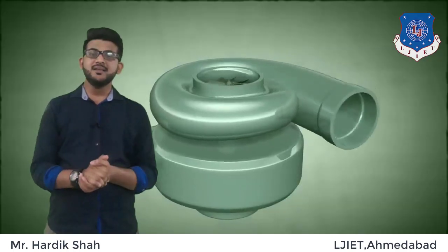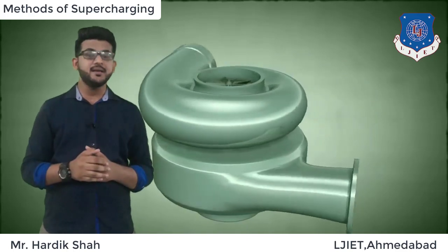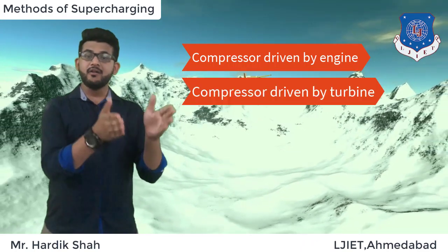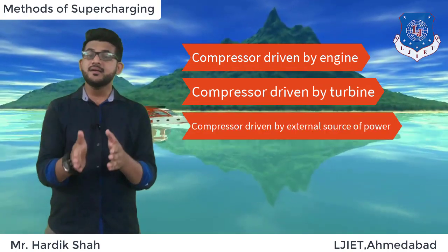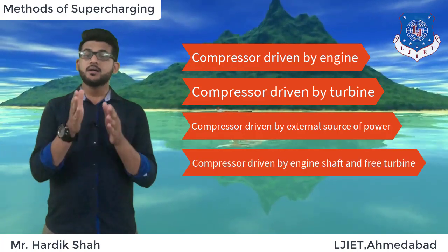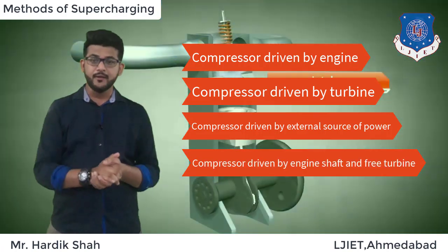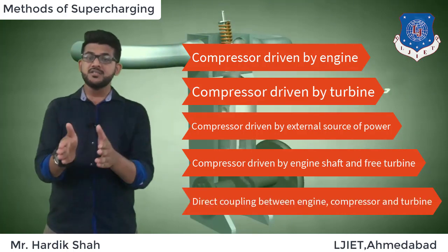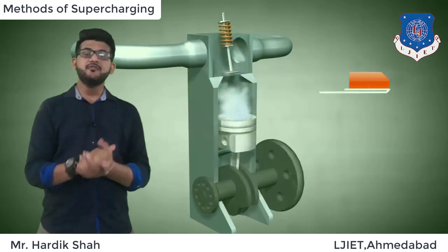First, let's see the methods of supercharging. Basically, there are five methods for supercharging in the IC engine. The first one is compressor driven by the engine; second is compressor driven by turbine; third is compressor driven by external source of power; fourth is compressor driven by engine shaft and free turbine; and fifth is direct coupling between the engine, compressor, and turbine.